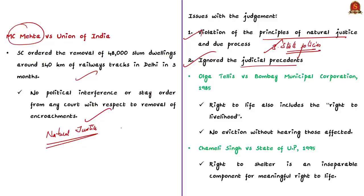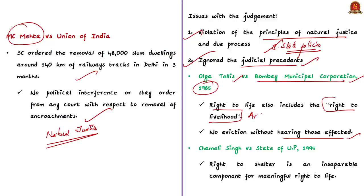The Supreme Court also ignored judicial precedents upholding the right to livelihood and shelter. A landmark judgment was delivered in 1985 in the Olga Tellis versus Bombay Municipal Corporation case, where the Supreme Court held that the right to life includes the right to livelihood, and no eviction shall take place without hearing those affected. This 1985 judgment recognizes that the right to livelihood is implicit under Article 21 and that eviction can only be carried out after giving an opportunity to the slum dwellers.